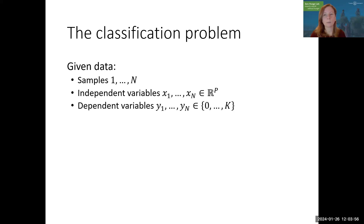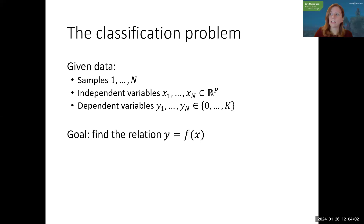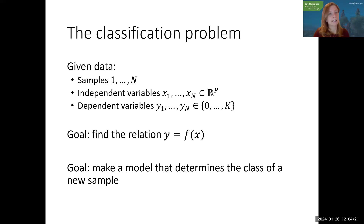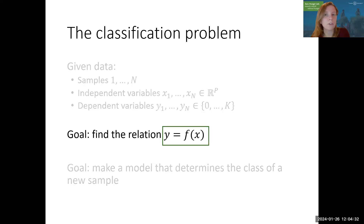In classification, the dependent variable is a class — it could be k classes, but often you will see two classes. In the research I work on, we have genome data — the genetic information of a whole bunch of people — some of them do have the disease we're studying, and some do not. So you have a binary class of 0 or 1. Everything I'm going to tell you today can be extended to multiple classes as well.